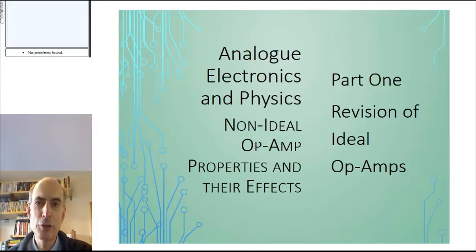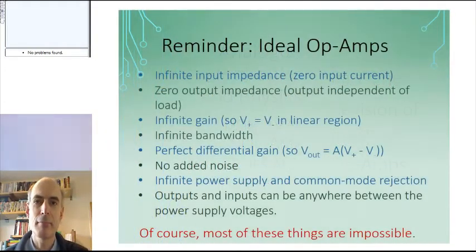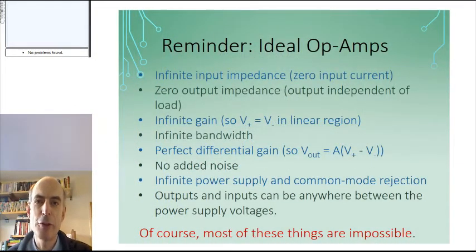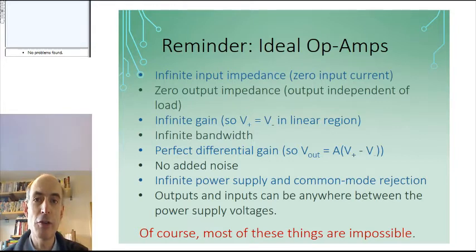First of all, let's just do a quick reminder of what the properties of ideal op-amps are. They have an infinite input resistance, which means that no current at all flows into the inputs of an ideal op-amp.